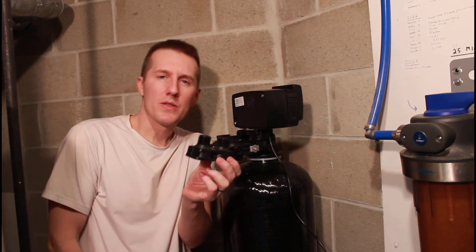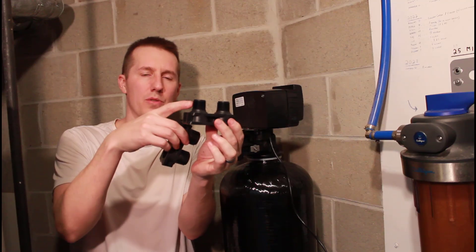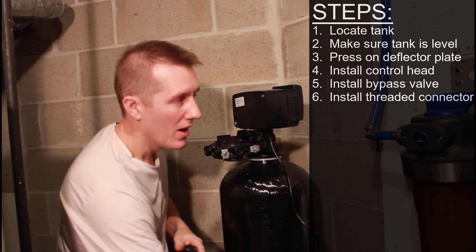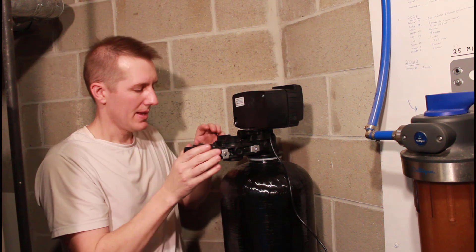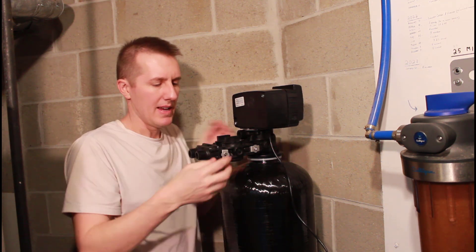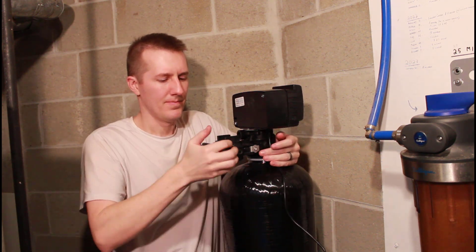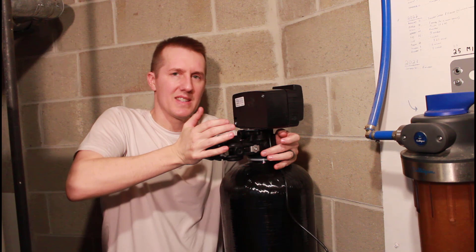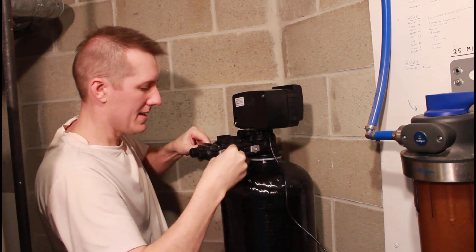The next part that goes on is this threaded yoke, it's called. And they give you two, three-quarter inch and one inch. Now, all my pipes are three-quarter inch, so that's what I'm going to be using. And this goes on the same way. Just pushes on, and then you tighten up these little metal clips on the end. Push it until it's nice and seated. And there's that O-ring in the middle. And then tighten the screws up.